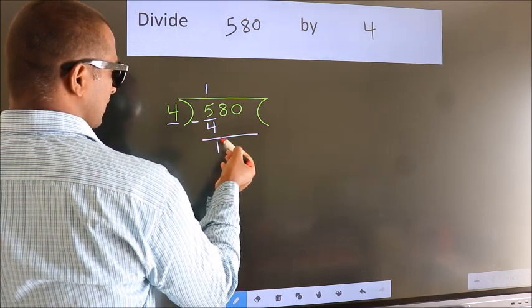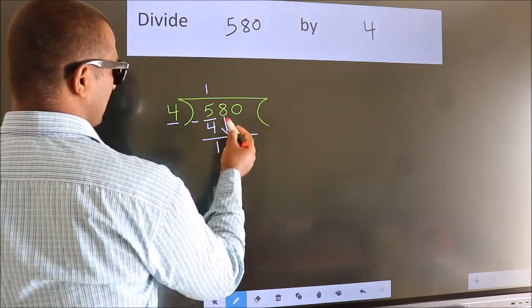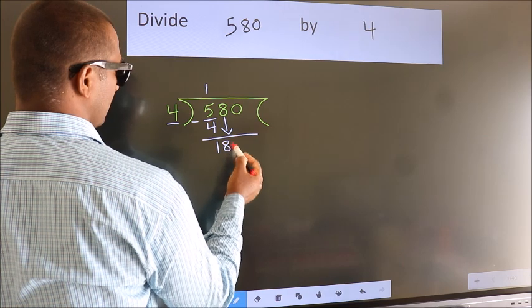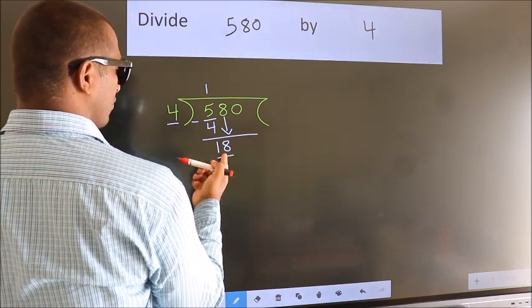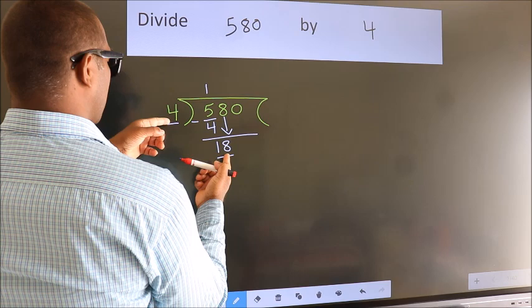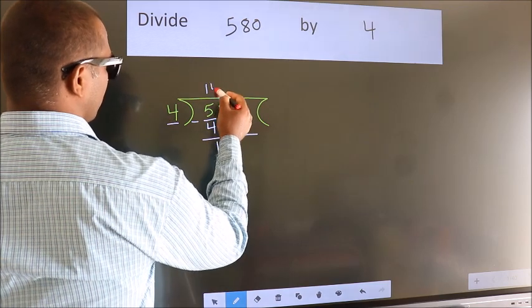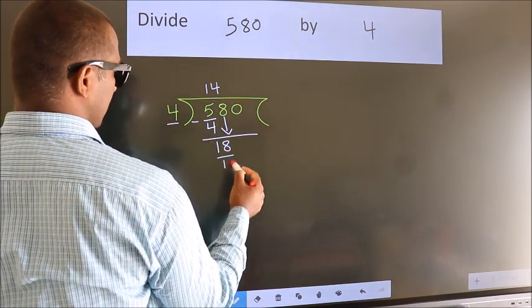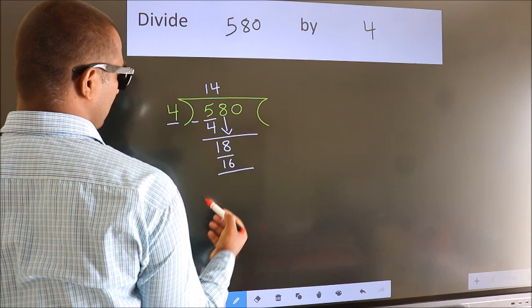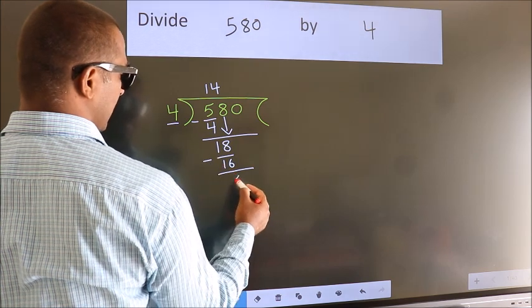After this, bring down the beside number. So 8 down, so 18. A number close to 18 in the 4 table is 4 fours 16. Now we subtract. We get 2.